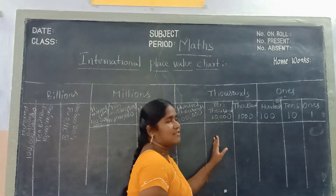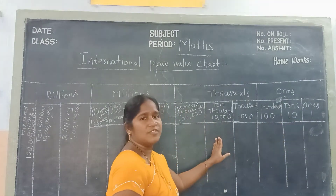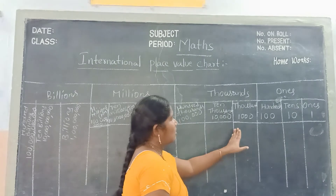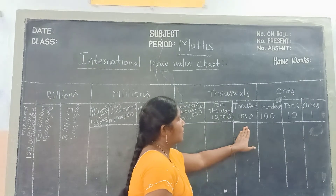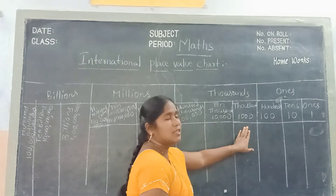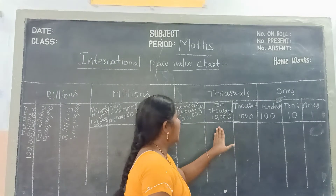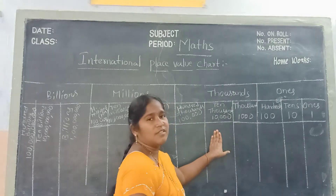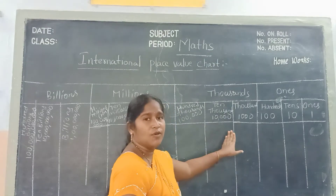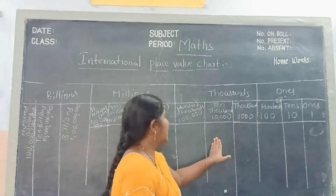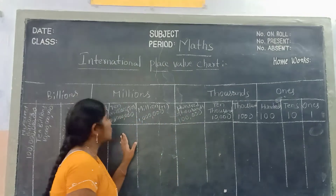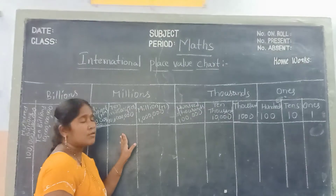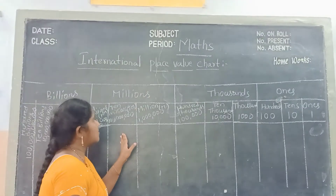And next one goes to the thousands period, children. In the thousands period we have 1,000s and 10,000s. And next one goes to millions.